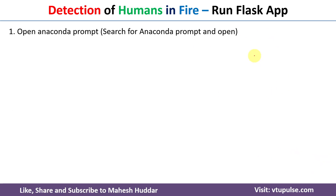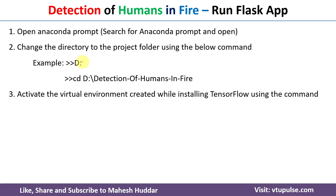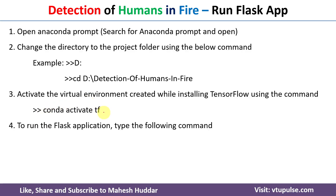To run the Flask app, open the Anaconda prompt, change the directory using D: and cd, and activate the virtual environment using conda activate tf. To run the Flask application, type the command: python app.py. Once you enter this command, you will get a URL. Click on that URL and the Flask app will open in the browser.